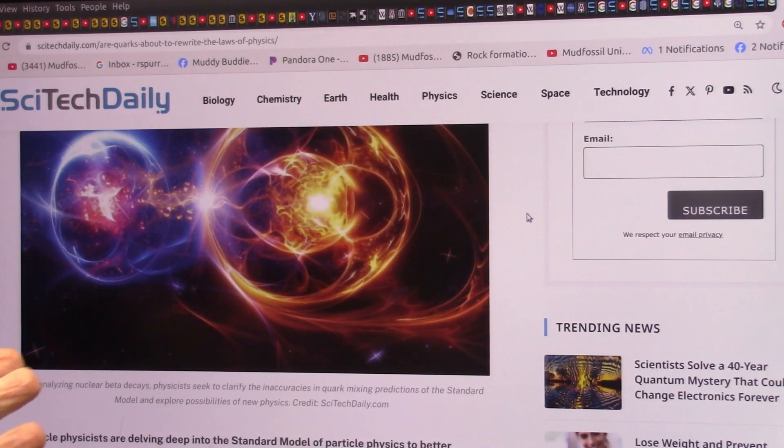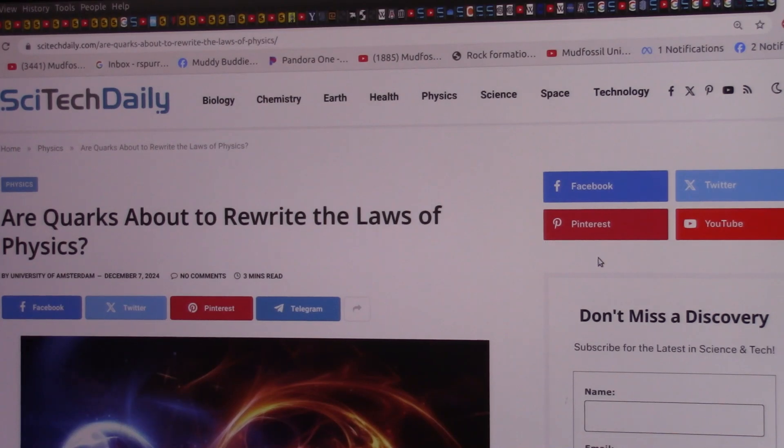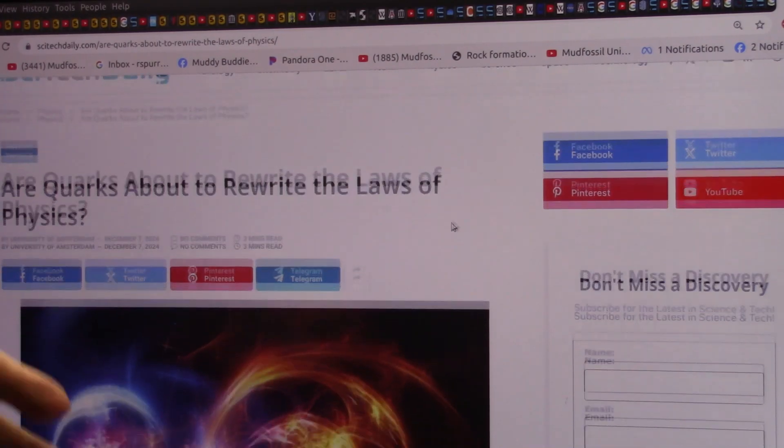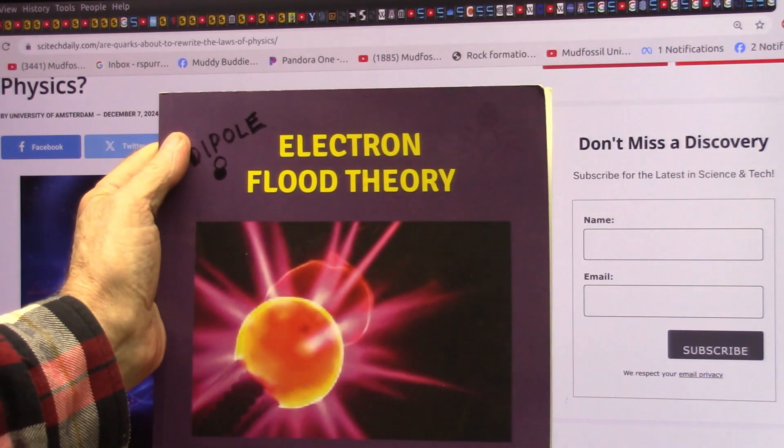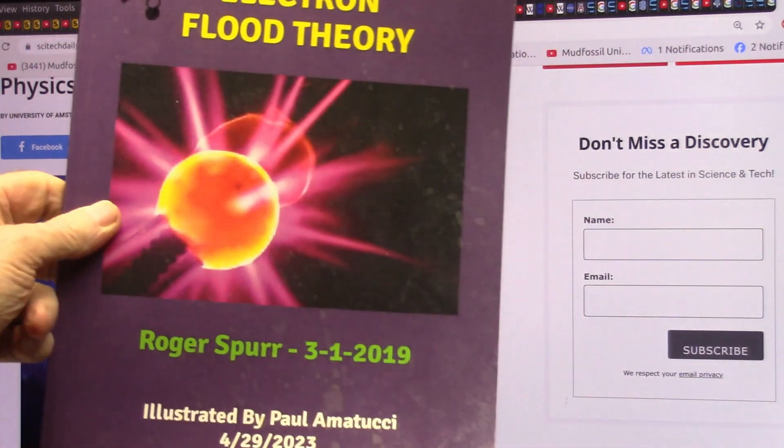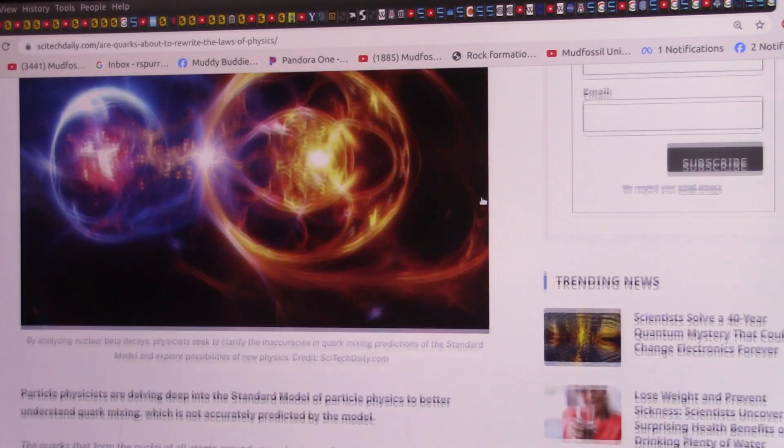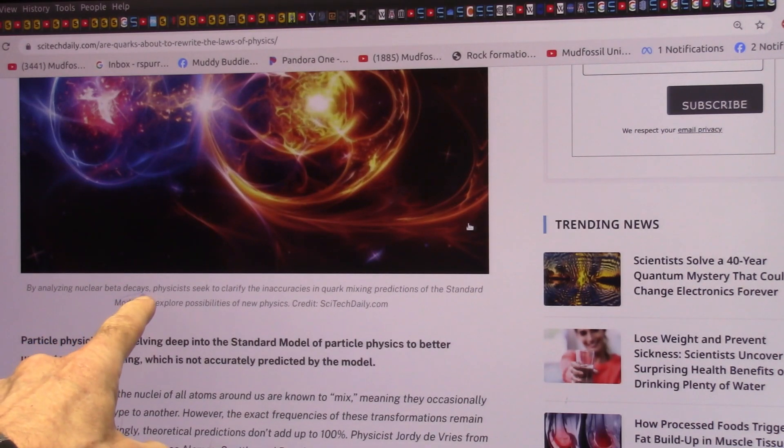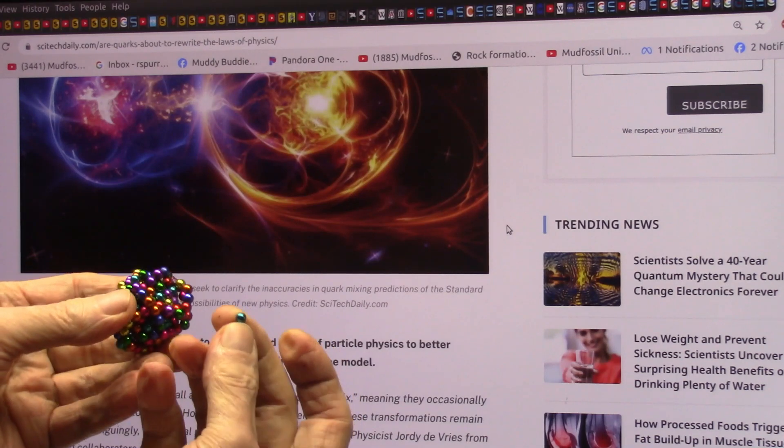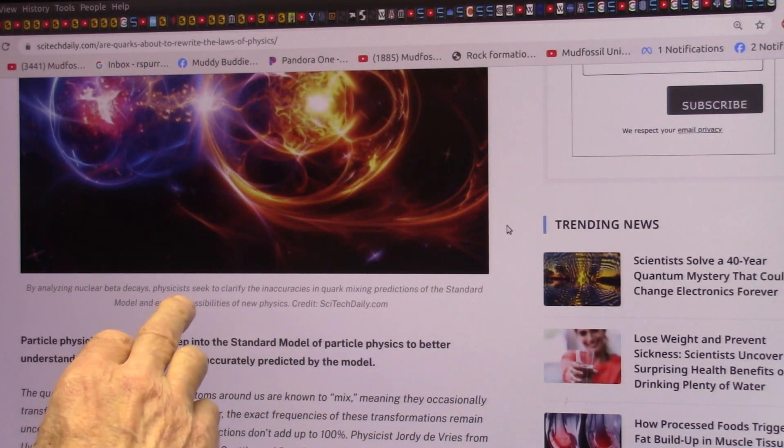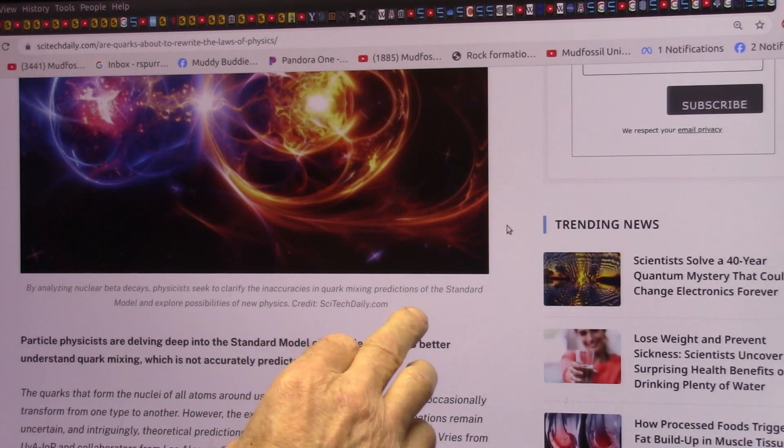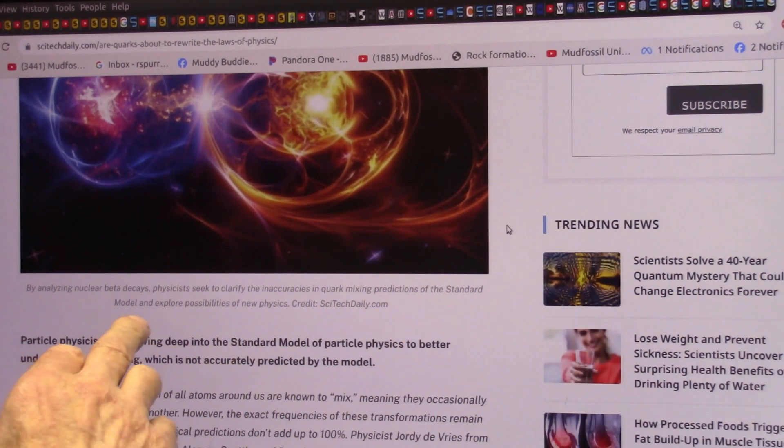Don't forget, this is what they're talking about. Are quarks about to rewrite the laws of physics? No, dipole electron flood theory has rewritten them long ago. And now they are proven. Since I got our papers about this for years and years and years. But in 1970, after I first got out of the army, after working in nuclear missile sites, I had the theory that there had to be dipoles. It couldn't be the way they wanted for the standard model. It didn't work. And they say that it's true. By analyzing nuclear beta decays, which is as these things fall apart, that's a decay. Physicists seek to clarify inaccuracies in quark mixing predictions. They don't work at all. They just don't work. They don't work.